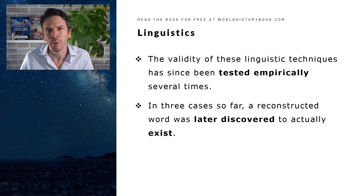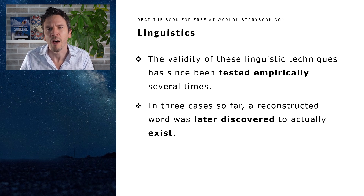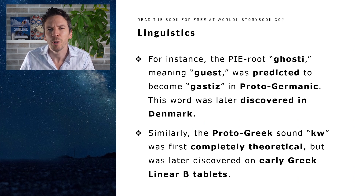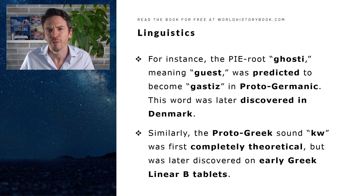The validity of these linguistic techniques has since been tested empirically a number of times. In three cases so far, a reconstructed word was later discovered to actually exist. For instance, the PIE root ghosti, meaning guest, was predicted to become gastiz in Proto-Germanic, and this word was later actually discovered in Denmark. And similarly, the Proto-Greek sound kuh was first completely theoretical, but was later discovered on early Greek Linear B tablets.